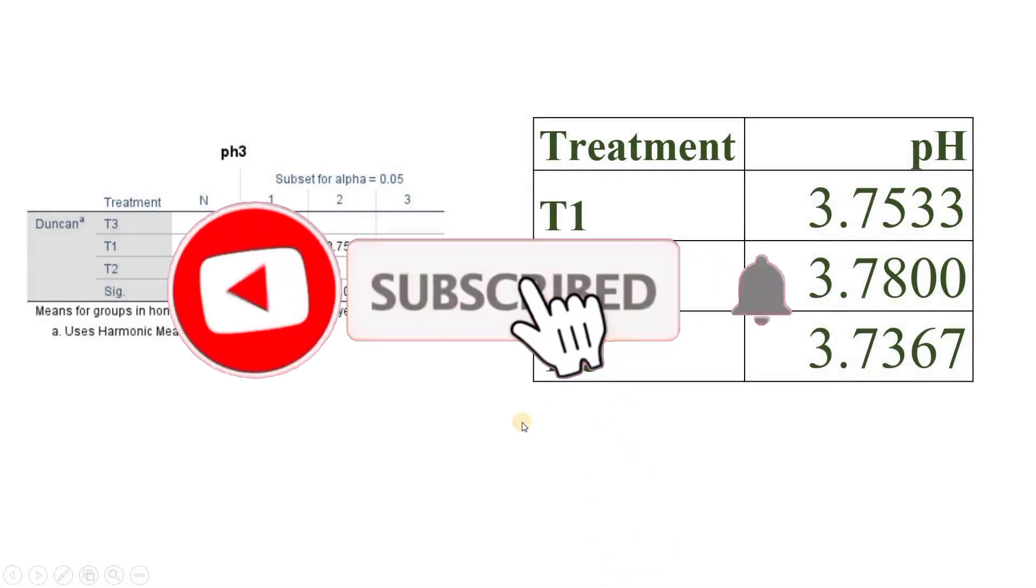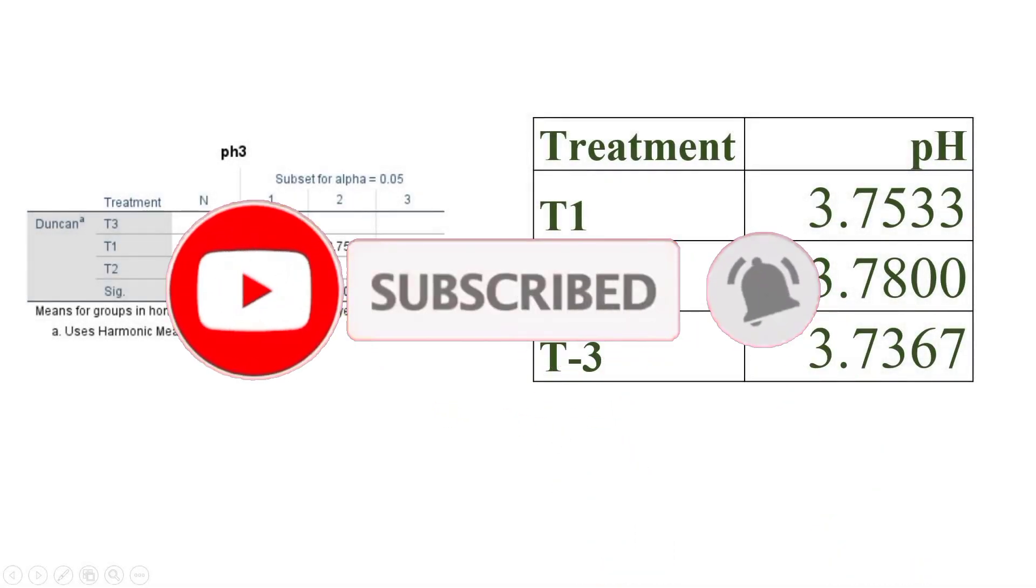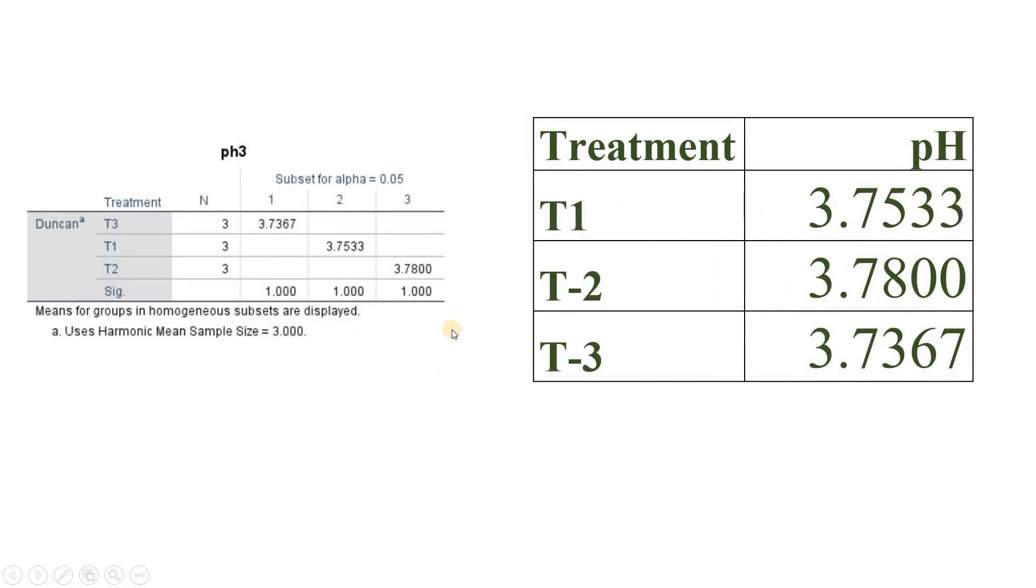Hello everyone, today we will see how we can add superscript letters from the Duncan table. In a previous video, I have already shown how to do ANOVA test, one-way ANOVA test with the post hoc Duncan test. You can go through my previous video. So here, to add the superscript letters in the table, I have taken one example.